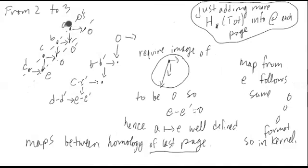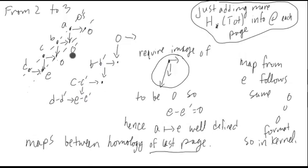From page two to page three, we do something very similar. Now we take something in the kernel going from here to here — not just horizontal and vertical, but also the map we just defined. In order to guarantee this is zero for well-definedness, we need the image of that previous map to be zero. So we're taking the homology of what we had: first horizontal, then vertical of the horizontal, then taking homology along these new arrows. Two in a row gives zero — that does follow if you work out the details.